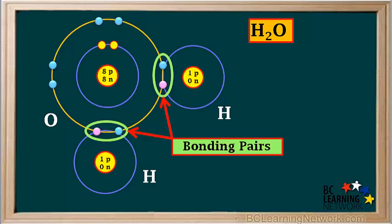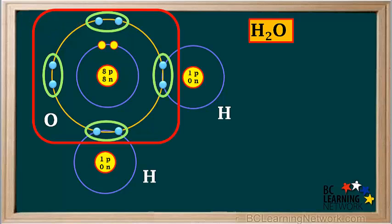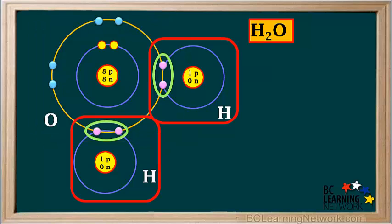The two pairs of electrons that form the covalent bonds are called bonding pairs. Notice that a water molecule also has two lone pairs. Lone pairs are not used in bonding. The oxygen atom has a stable octet in its valence shell. And each hydrogen atom has a pair of electrons, giving it the stable electron arrangement of the noble gas helium.